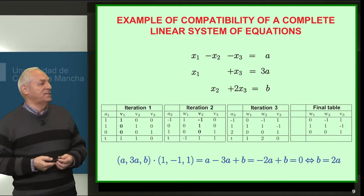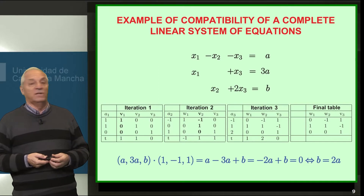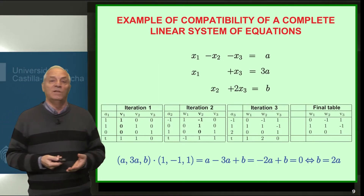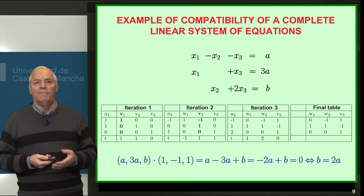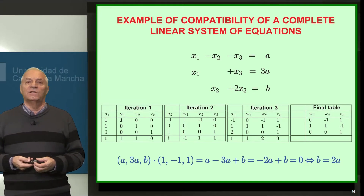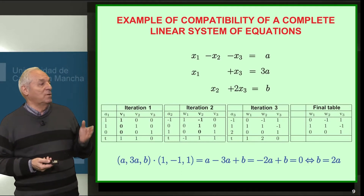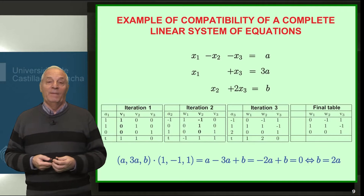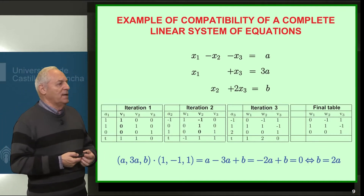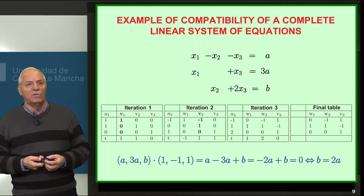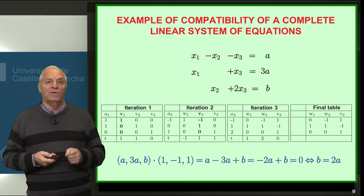Consider the system of three equations with three unknowns shown above, where the independent terms are not numerical values but functions of a and b. We are asking: what conditions must a and b satisfy so that the system has a solution — that is, to make it compatible? We need to consider the column vectors and obtain the orthogonal subspace to the subspace generated by them.